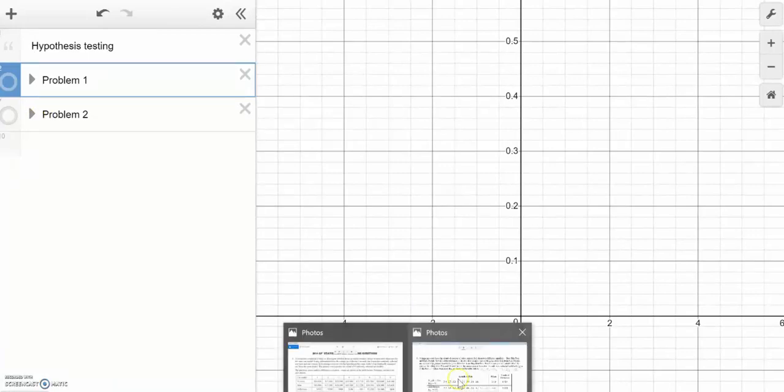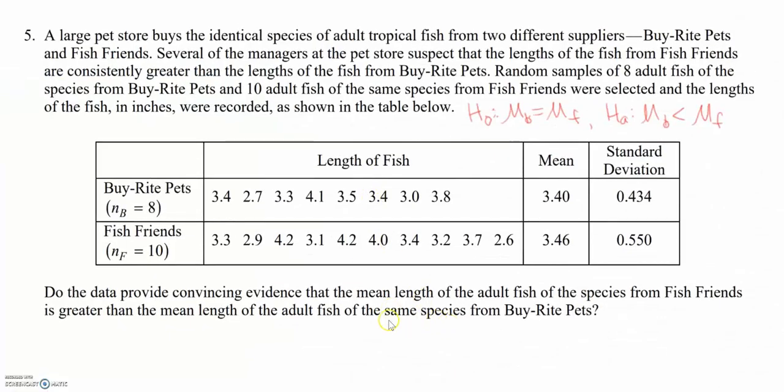So next, let's do a two-sample test. Here's a problem from a few years ago where we have goldfish from Byrite Pets and Fish Friends. And do the data provide convincing evidence that the mean length of adult fish of the species from Fish Friends is greater than the mean length from Byrite Pets.